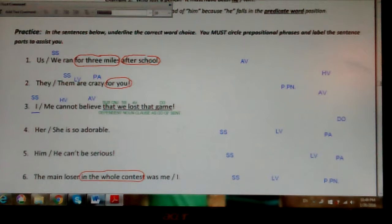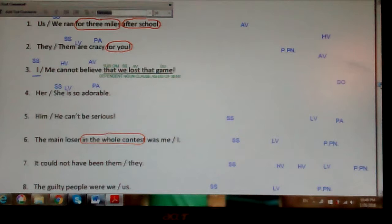Next one, number four. Her or she is so adorable. No prep phrase. Is my main linking verb. Who is this about? It's about she. She might be taking the place of Sally's name. Sally is so adorable. So that's what pronouns do, they take the place of nouns. She is so adorable.